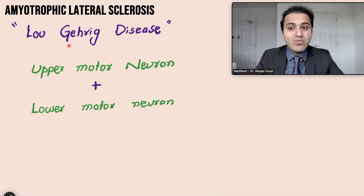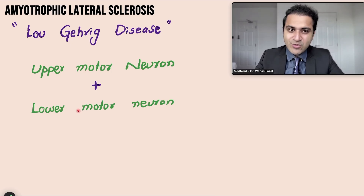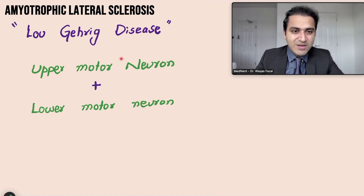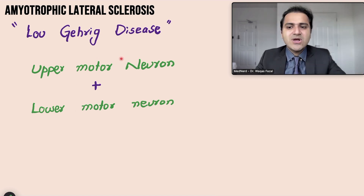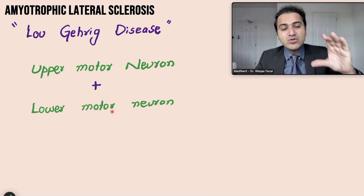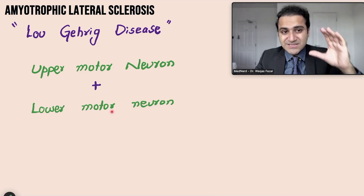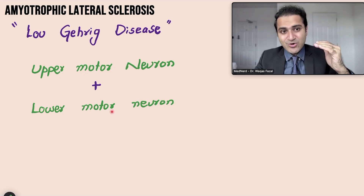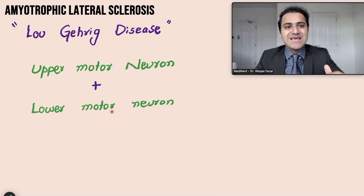Basically in Lou Gehrig disease, both upper motor neuron and lower motor neuron damage takes place. Most neurology diseases present with either upper motor neuron damage, as happens in stroke patients, or lower motor neuron injury, as happens in GBS patients. But if you see both signs and symptoms — upper motor neuron and lower motor neuron damage — that is ALS.